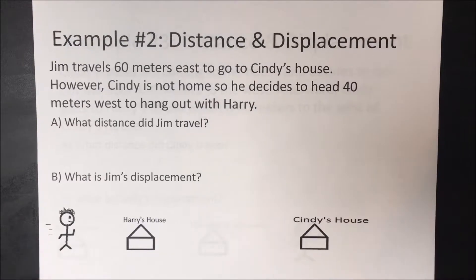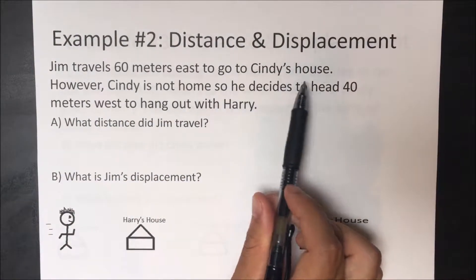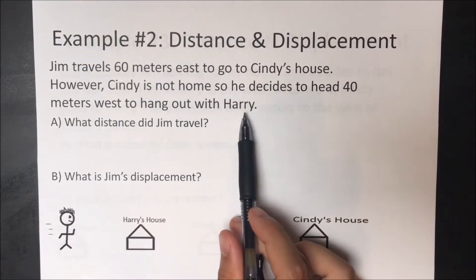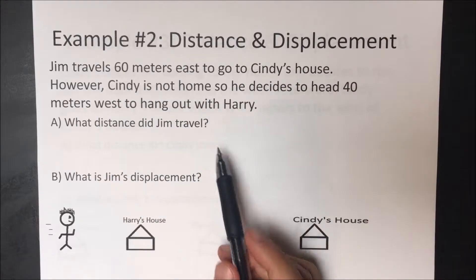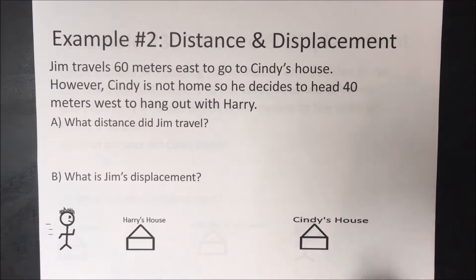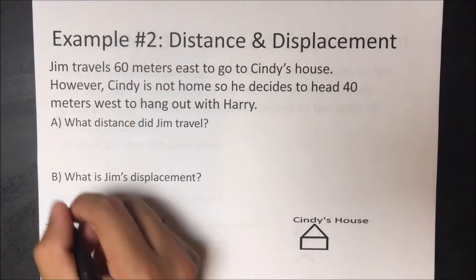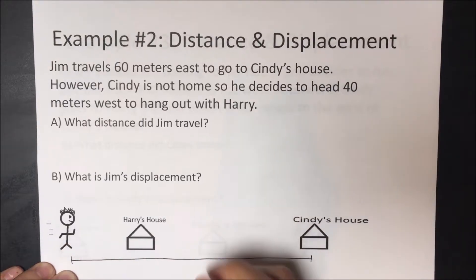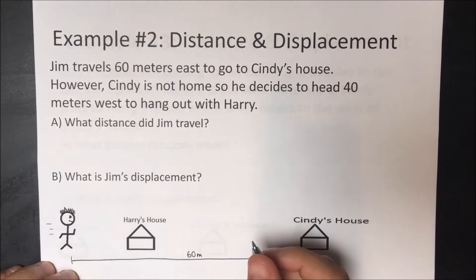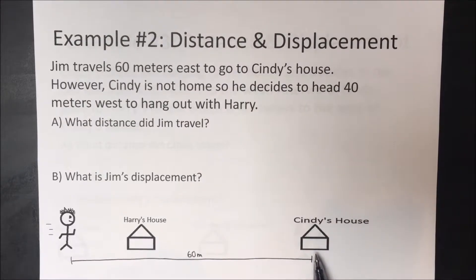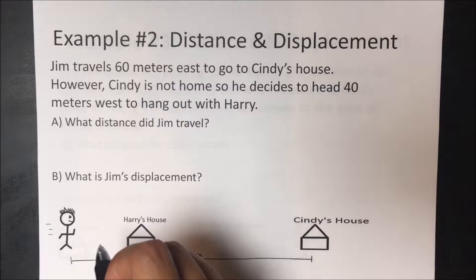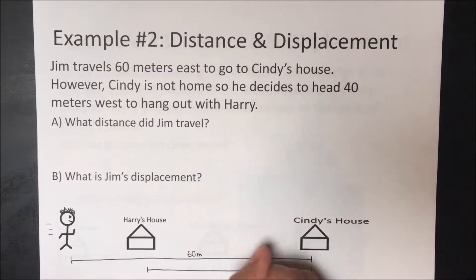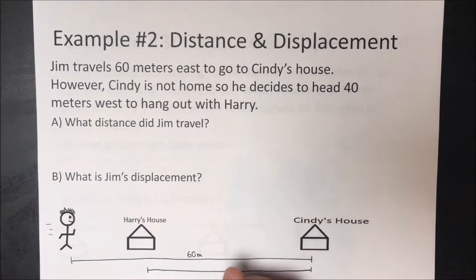Let's look at example number two. Jim travels 60 meters east to go to Cindy's house. However, Cindy is not home, so he decides to head 40 meters west to hang out with Harry. When doing this, it's important to draw out the problem. Jim walks 60 meters to Cindy's house, then goes back 40 meters to Harry's house.